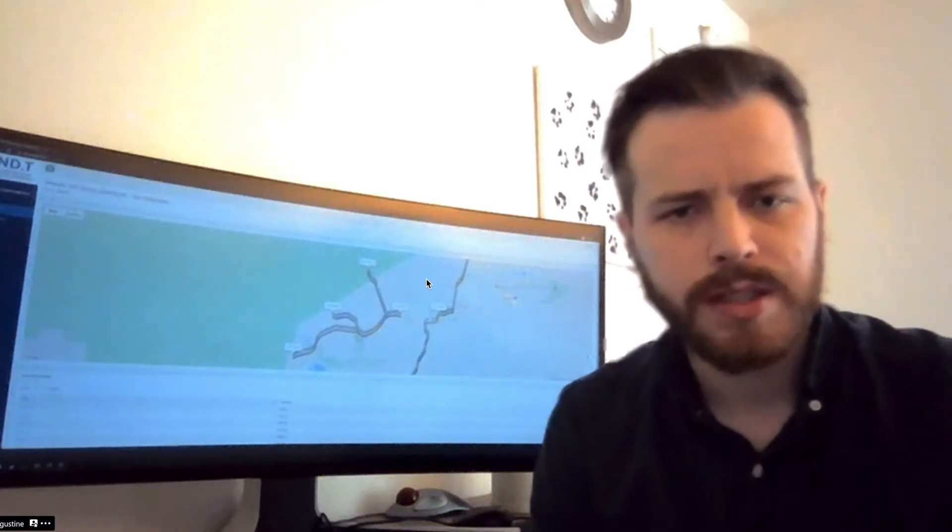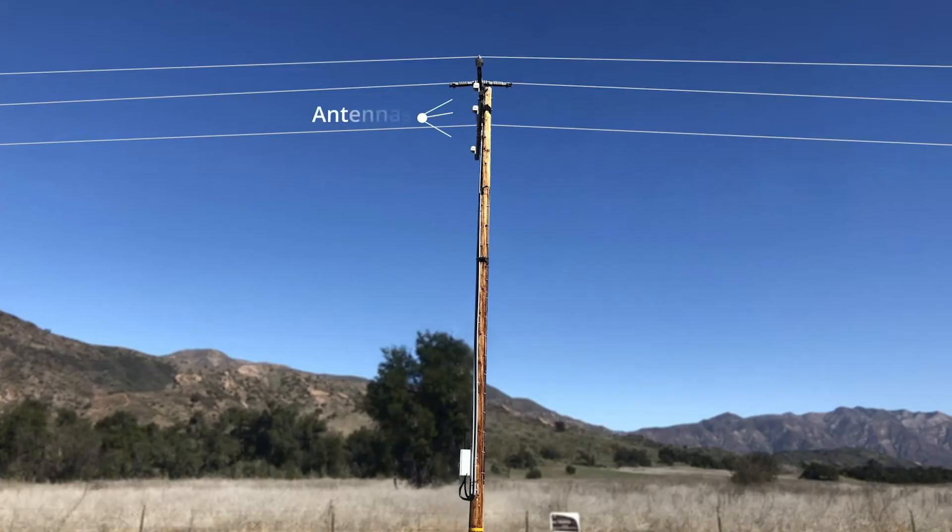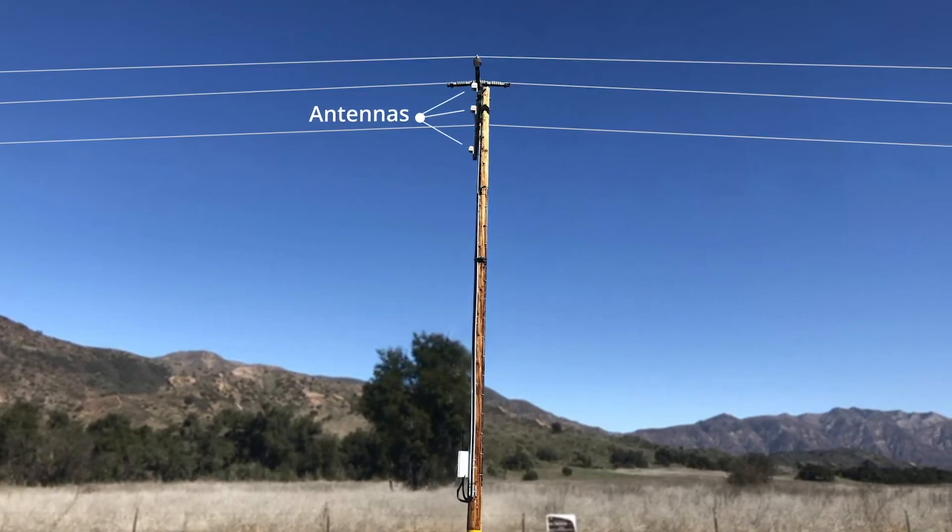Early fault detection is a system of antennas that sits underneath the power lines and it just listens. It listens all the time.